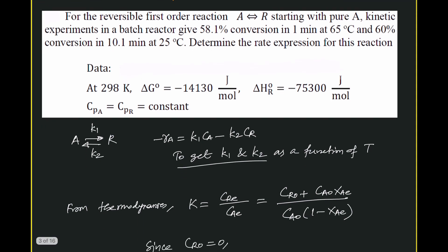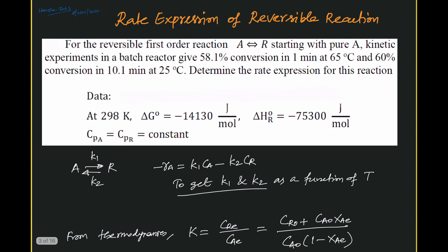For the first order reversible reaction, we can write: minus rA equals K1·CA minus K2·CR. So we have this rate expression. What is needed is to get K1 and K2 as a function of temperature. We can get that because at two temperatures we have conversion data, and using that we can get K1 and K2 as a function of temperature.